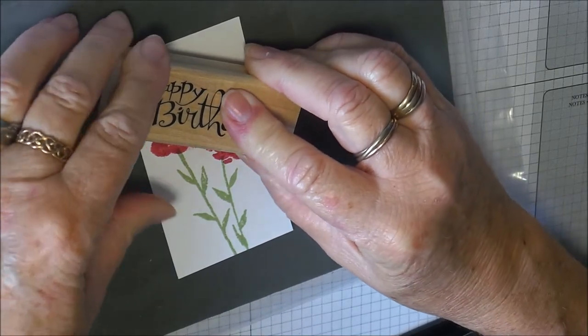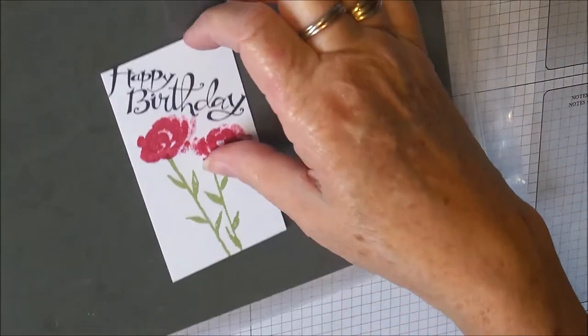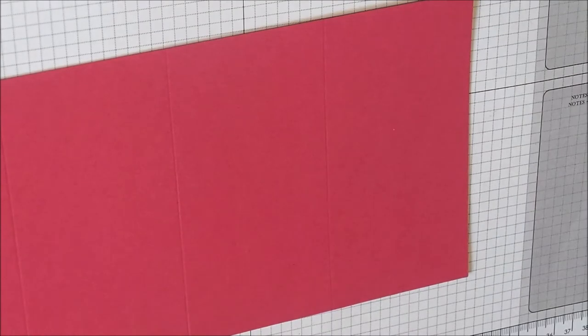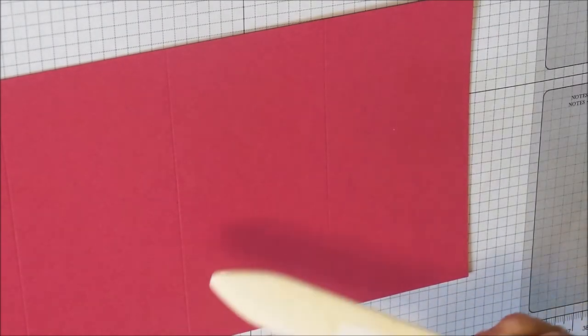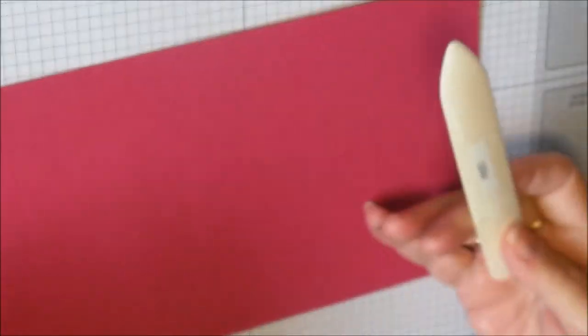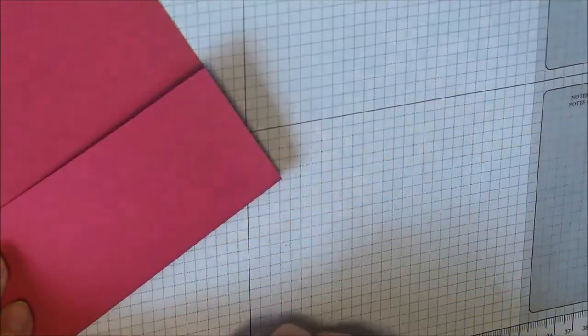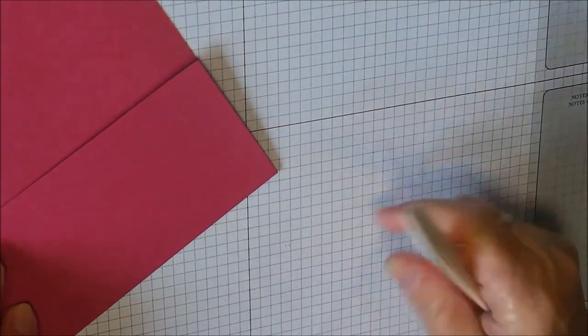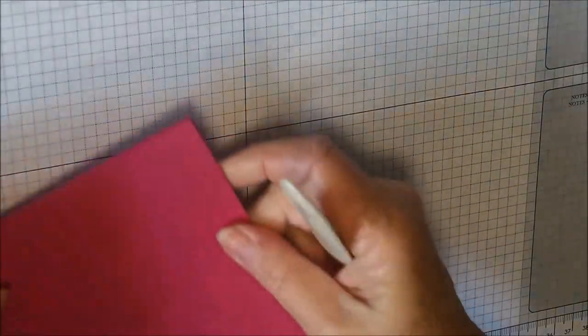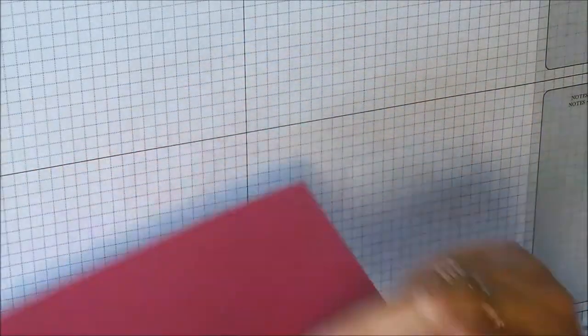Now we've come to actually making the card itself. I'm going to get my piece of Rose Red card that I've scored at two and three quarters, five and a half, and eight and a quarter. I'm going to fold away from myself first and burnish that, then fold towards myself and make sure the edges at the top and bottom are right, then fold away from myself. That gives you that screen looking effect.